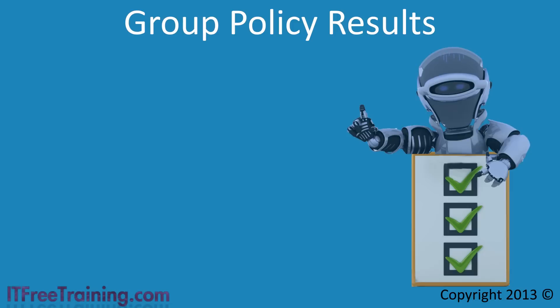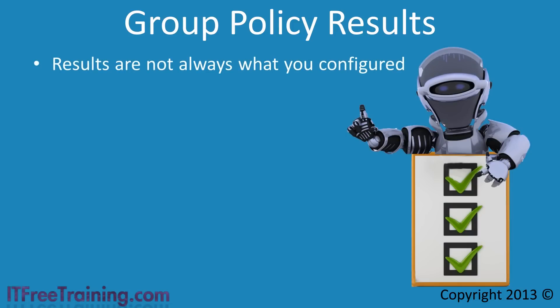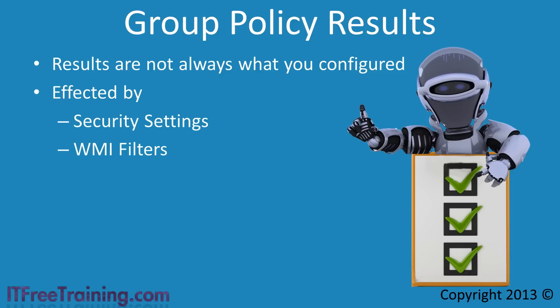Determining which settings have been applied on a client computer can be a tricky process. It is not always a simple matter to look at what settings have been configured in Group Policy to determine which settings will ultimately be applied. When Group Policy is applied, settings may not be applied due to factors like security settings and WMI filters. When trying to determine the end result a user or computer would receive from Group Policy, you essentially want to find the net effect — this is known as the resultant set of policy, or RSOP. The Group Policy results tools rely on this data to determine which settings are being applied.